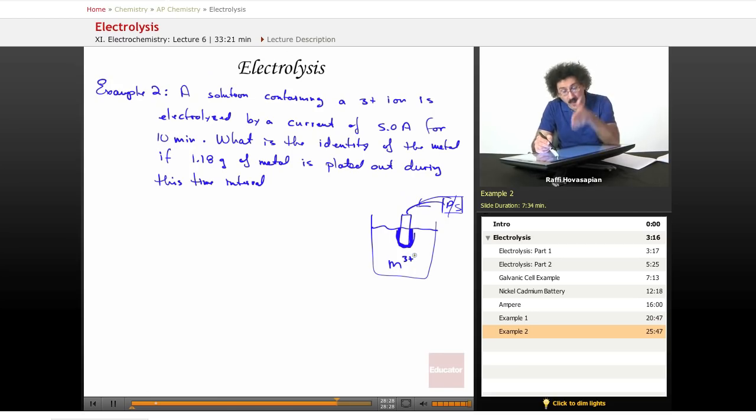We want to know what that metal is. Well, the only thing we know about it is that it's a 3 plus ion. Well, first of all, let's just write the equation so we understand the mole, the number of moles of electrons that are transferred. So metal goes to metal 3 plus ion plus 3 electrons. I could have written it the other way. It doesn't really matter. I could have written M3 plus plus 3 electrons goes to M.